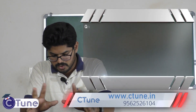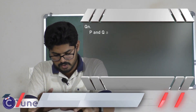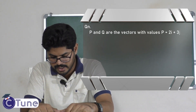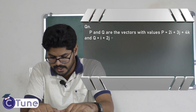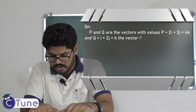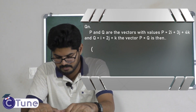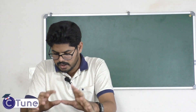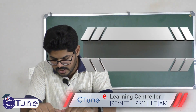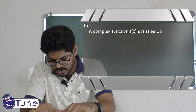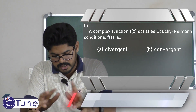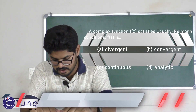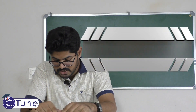If P and Q are vectors with P = 2î + 3ĵ + 4k̂ and Q = î + 2ĵ + k̂, the vector P cross Q can be calculated using the cross product in Cartesian coordinates. A complex function f(z) satisfying the Cauchy-Riemann conditions is an analytic function. Option D is the correct answer.